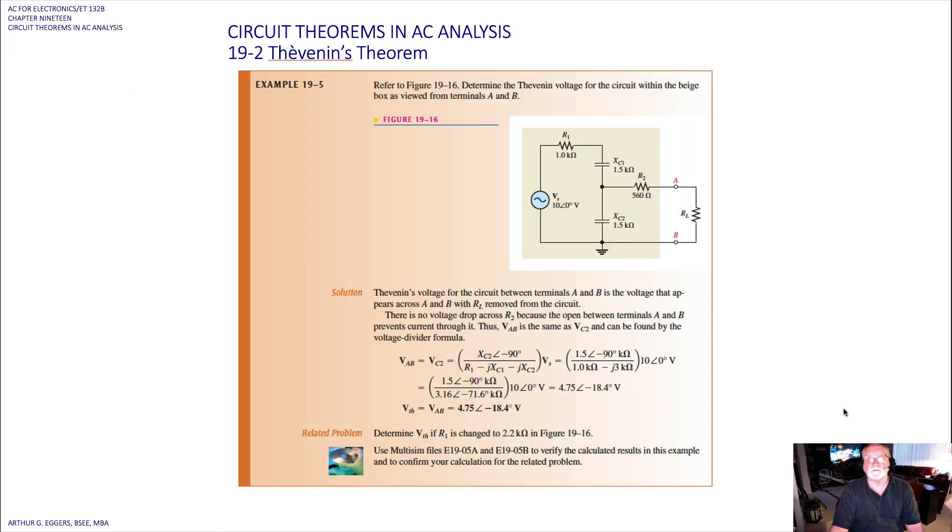Let's take another quick one. Determine the Thevenin voltage for the circuit within the beige area as viewed again from A and B. So in this one you can see we're going to have to do some collapsing and analysis to calculate this. The Thevenin voltage for the circuit between A and B is the voltage that appears across A and B with R_L removed from the circuit. There is no voltage drop across R2 because the open between A and B prevents current from flowing. So it's like that resistor doesn't even exist. So V_AB is the same as the voltage drop across the capacitor X_C2 and can be found by the voltage divider formula.